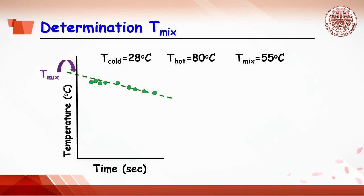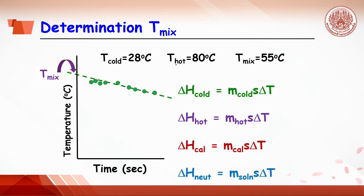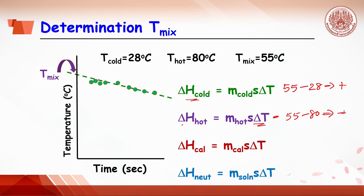For instance, if the temperature of cold water is 28°C, temperature of hot water is 80°C, and T mixed from curve plotting is 55°C — delta T for cold water is 55 minus 28, which gives a positive sign, meaning heat was gained or absorbed. Delta T for hot water is 55 minus 80°C, which is negative, meaning heat was released. That is why hot water transfers heat to cold water and the calorimeter. Heat released from an exothermic reaction follows the same principle.